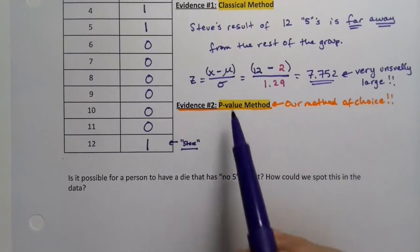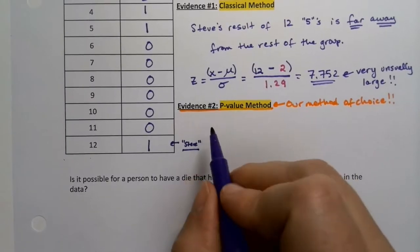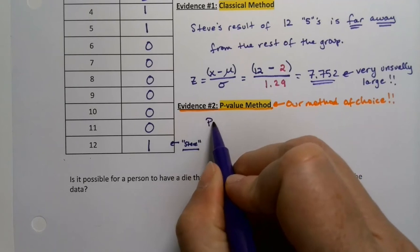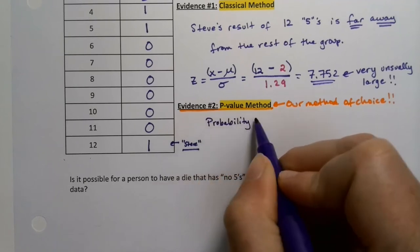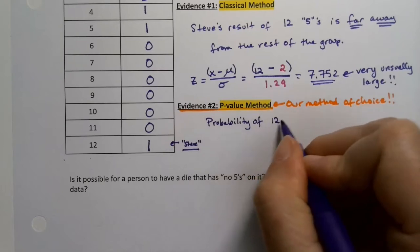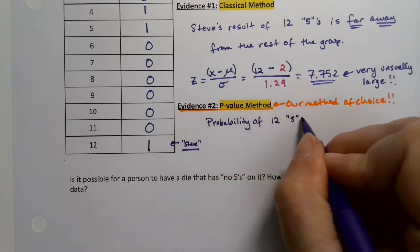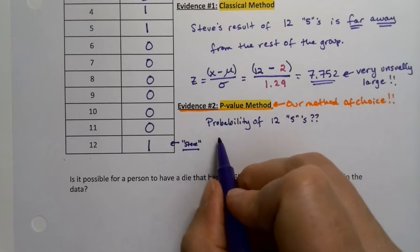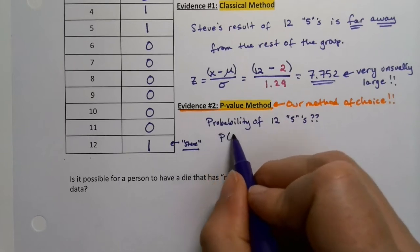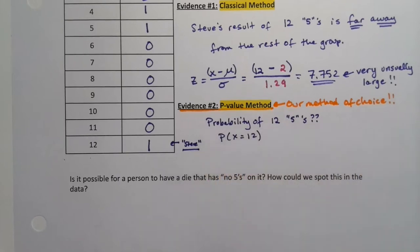And in the p-value method we're gonna say what's the probability of that result? So what's the probability of 12 fives in a row? Well it's binomial right? We know how to do this. The probability that X equals 12, it's been a while and we won't do binomial again, this is a nice review of binomial though.